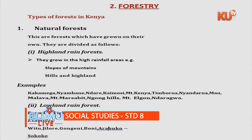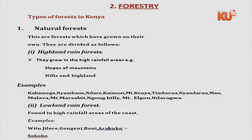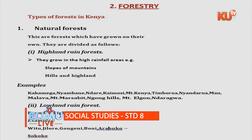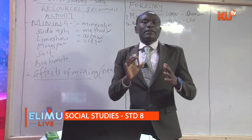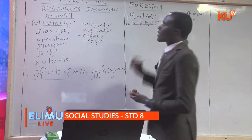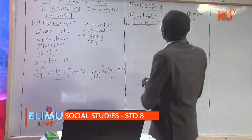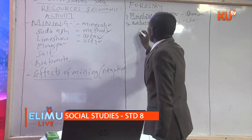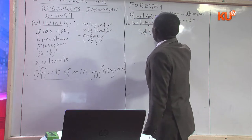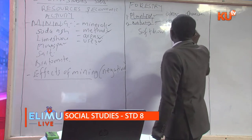Planted forests are established through human efforts and are most commonly found in areas on the slopes of Mount Kenya, Limuru, Timboroa, Molo, Tarbo, slopes of Mount Elgon, Njabini, Moiben Bridge, and also Nandi Hills. On planted and natural forest, you should know the trees found in each. The trees most commonly found in the planted forest are softwood, whereas in the natural forest they are hardwood.